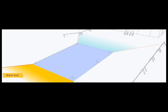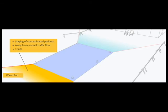The warm end is the area where contaminated patients are staged. It should be away from normal patient traffic flow in a location that can be secured and where clothing removal and triage can be accomplished. This area is restricted to contaminated persons and designated staff in appropriate personal protective equipment.